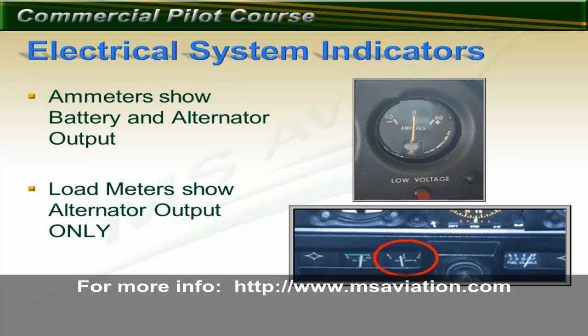The bottom picture is a load meter. Load meters show only the alternator's output and show nothing about the battery. This is why load meters start at zero amperes and don't have a negative scale like the ammeter. If the alternator fails, the load meter indicates zero. This is a common indicator on Piper aircraft.